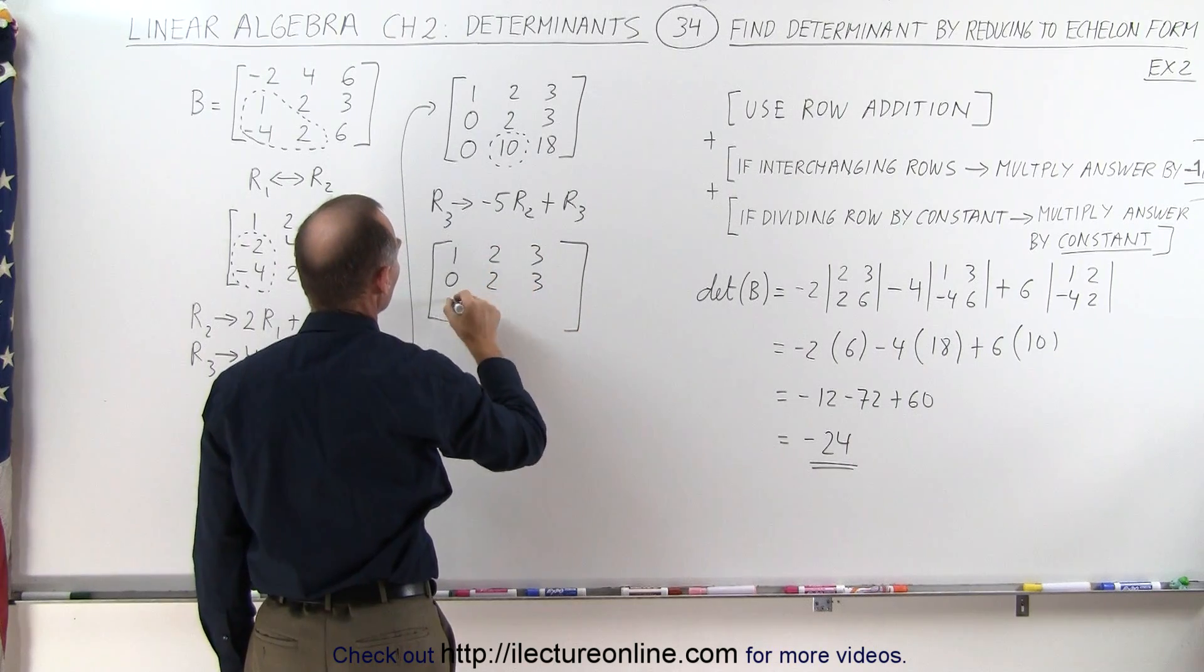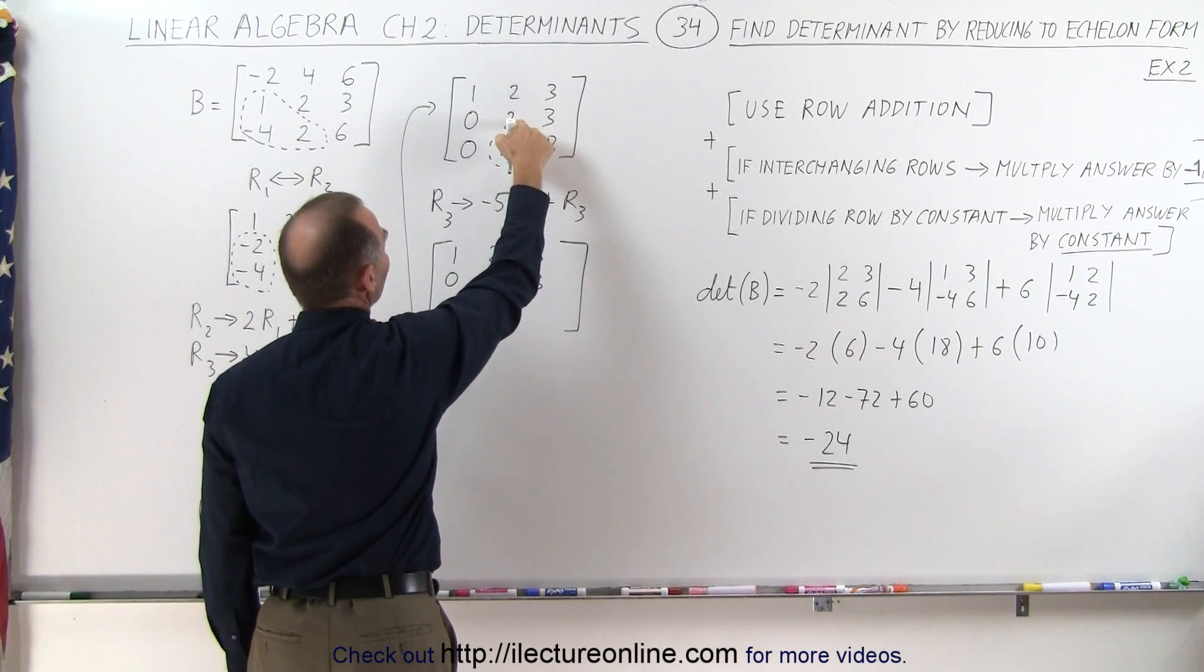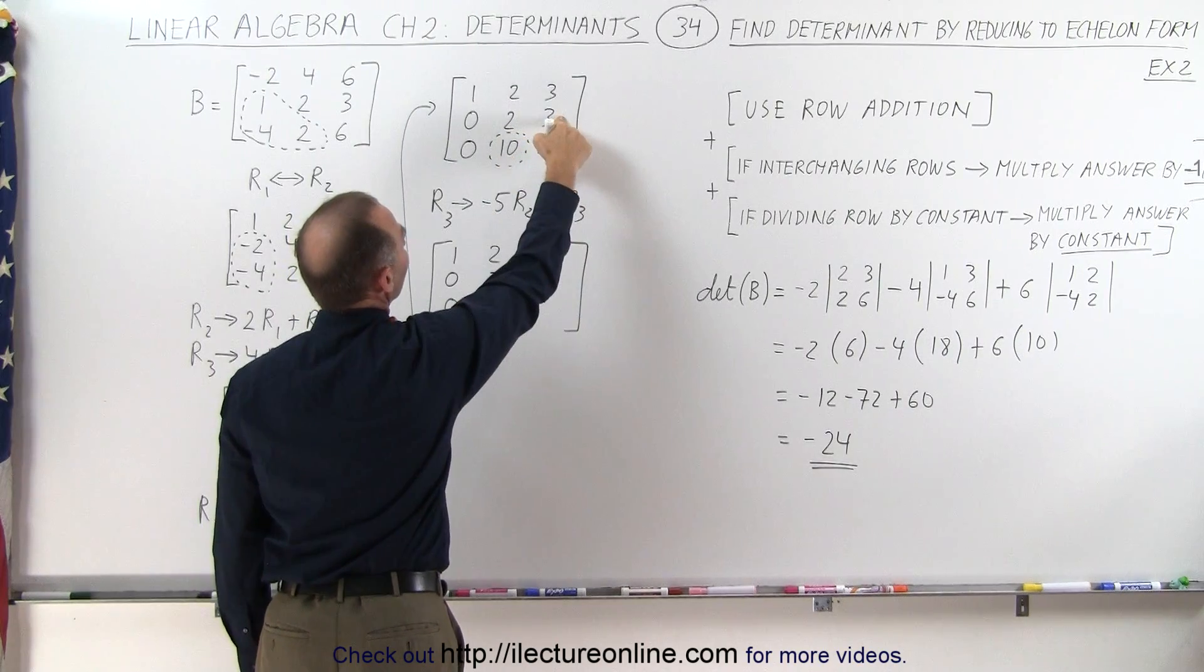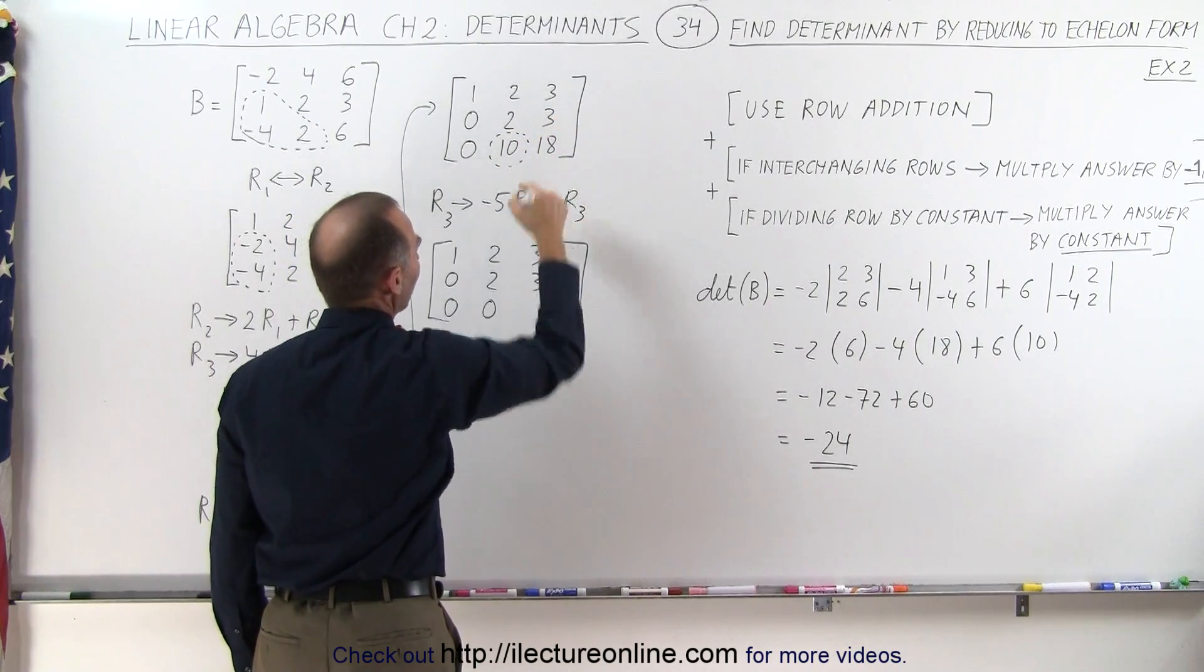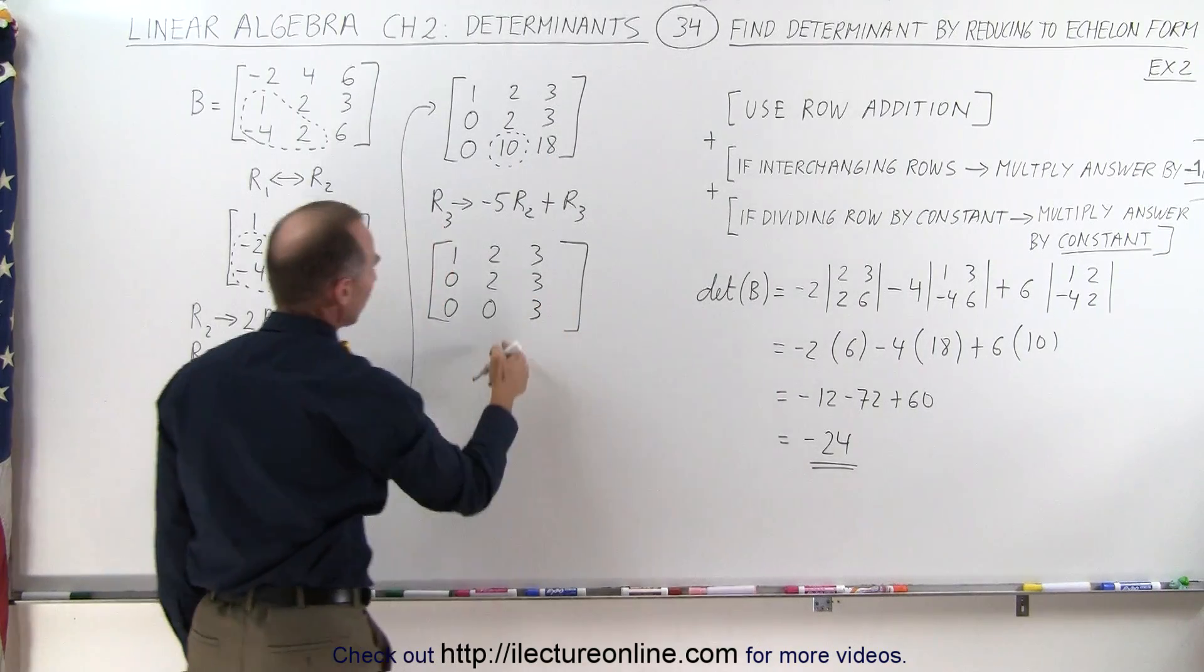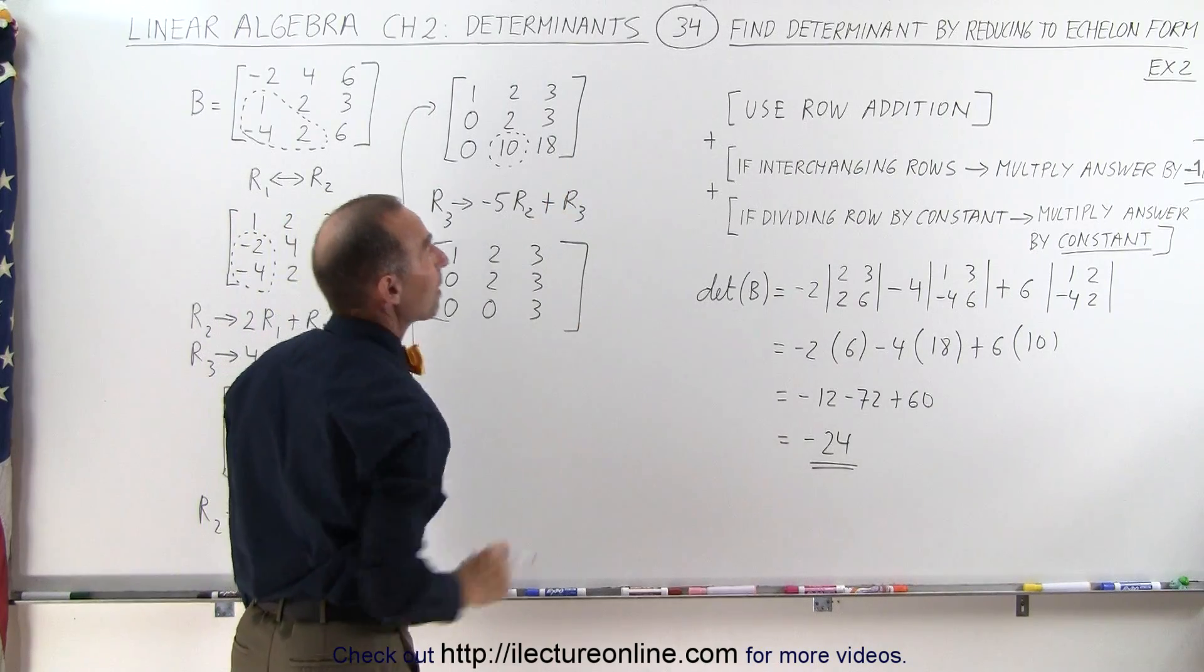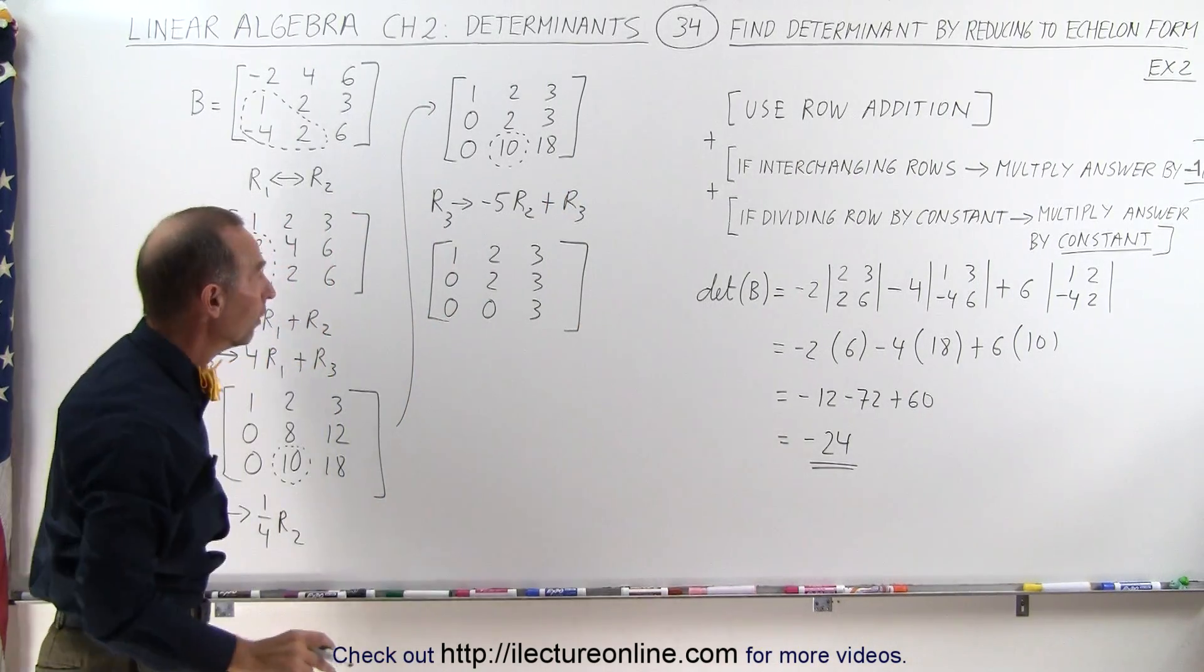And the third row now becomes, this is a 0, negative 5 times 2 is negative 10, add it to 10, and 0. Negative 5 times 3 is negative 15, add it to 18, gives me positive 3. Notice we have all 0s there. We've accomplished what we've set out to do. We have reduced the matrix to echelon form.